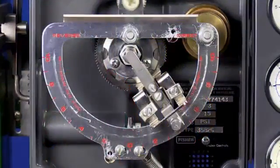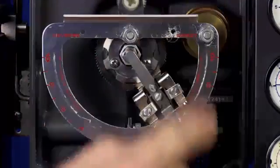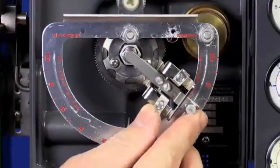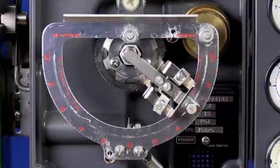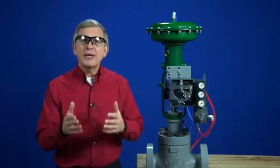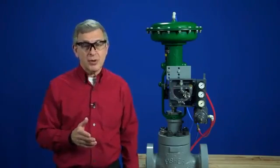To get started, we'll move the flapper assembly to the mid-range of its travel on the direct side of the summing beam or about to the number six on the scale. Understand that the direct and reverse labels on this summing beam only tell us how the positioner will react to the input signal and have nothing to do with what kind of actuator the positioner is on.